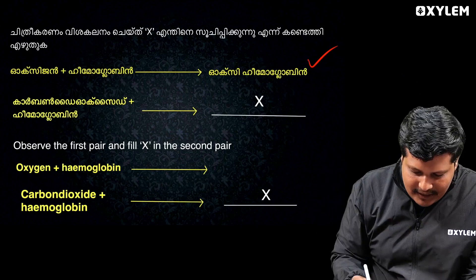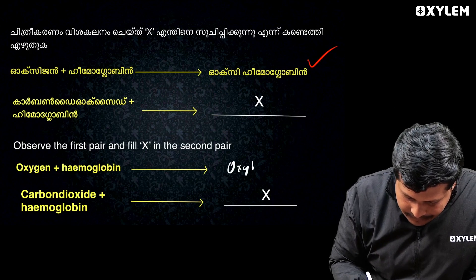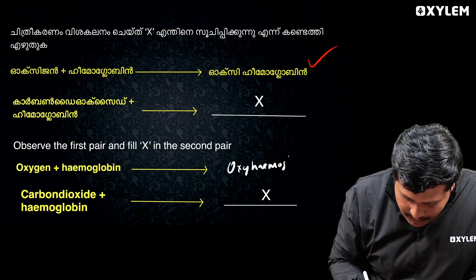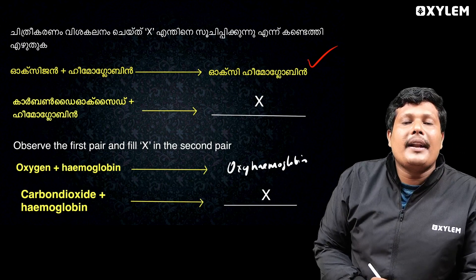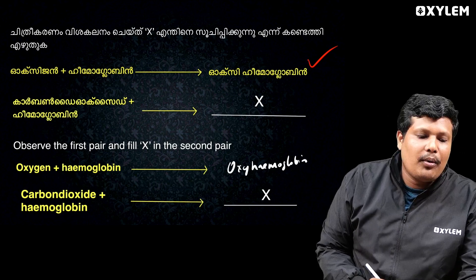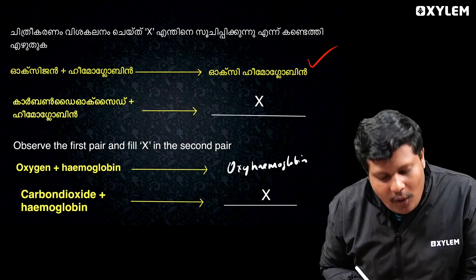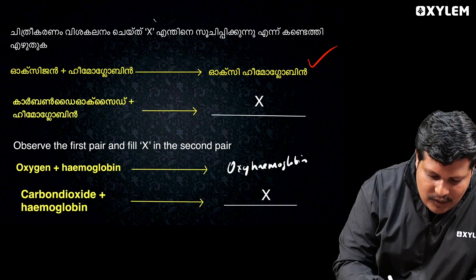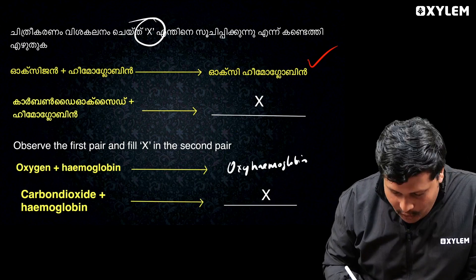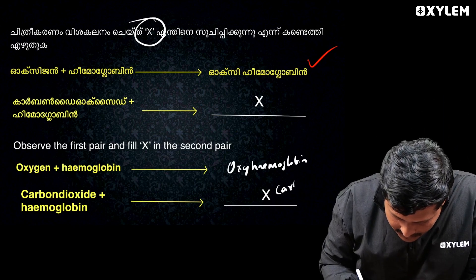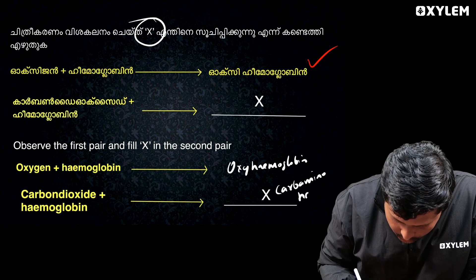Oxygen plus hemoglobin is called oxyhemoglobin. Carbon dioxide plus hemoglobin is called carbomonohemoglobin.